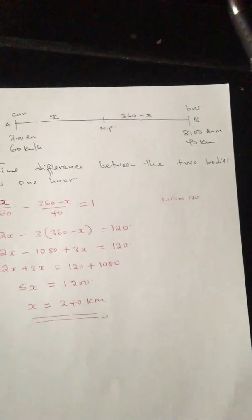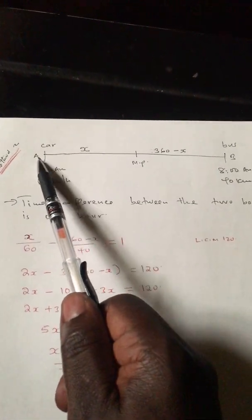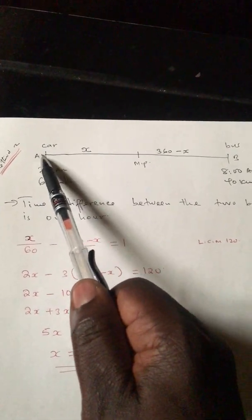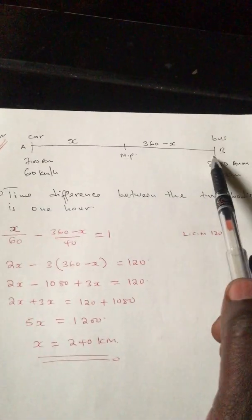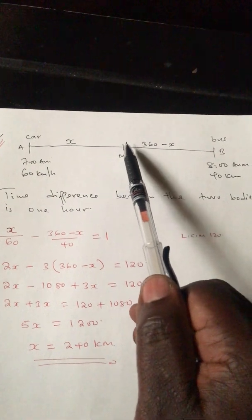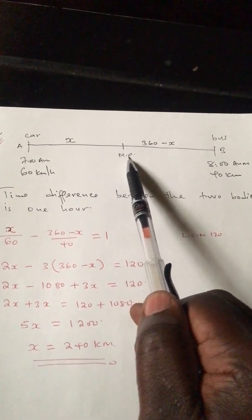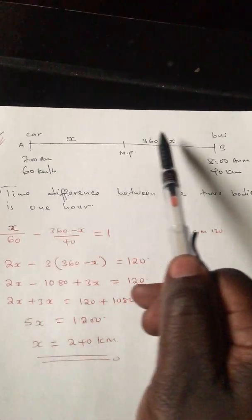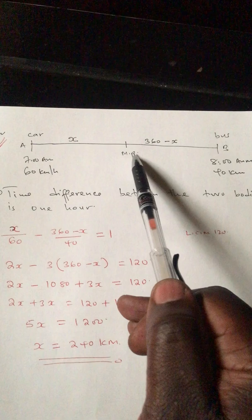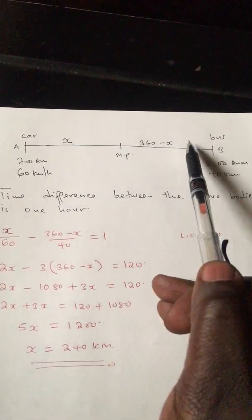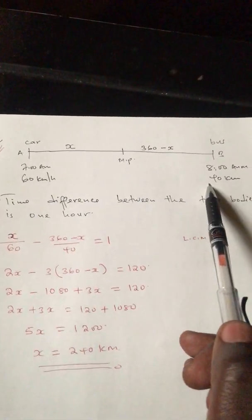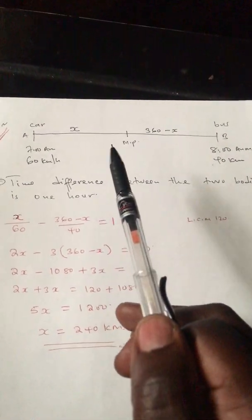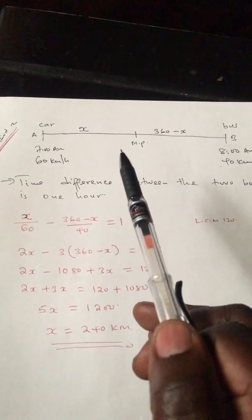The second method: the distance from A to B is 360. Let the distance from A to the meeting point be X. Then the distance from B to the meeting point is 360 minus X. We form an equation based on time, since in this topic equations are normally based on time.